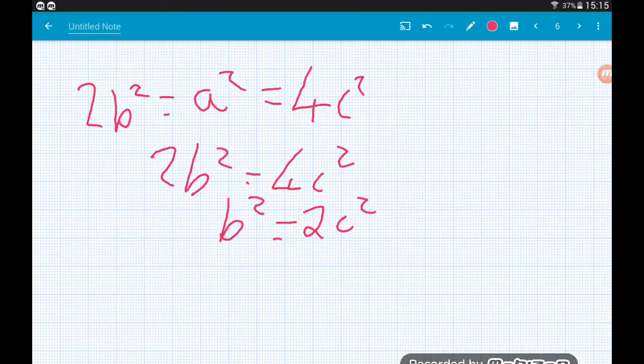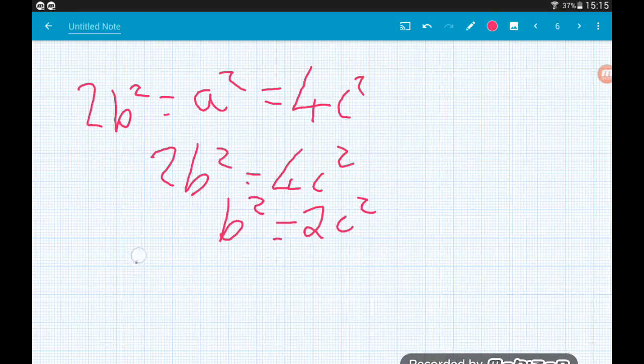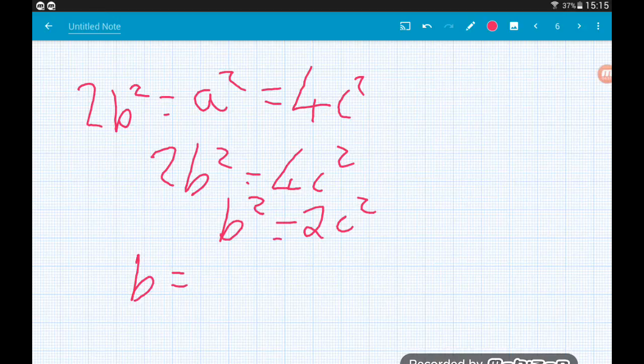And now we're in exactly the same position we were in on the last page. B squared is going to be even because it's equal to 2 times c squared. Now this means that b will also be an even number.